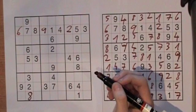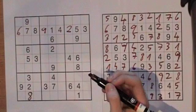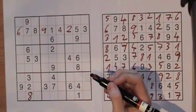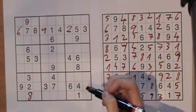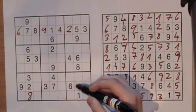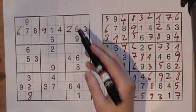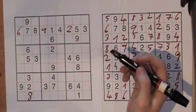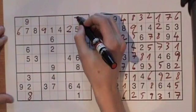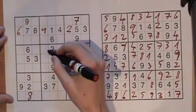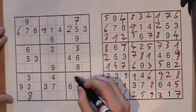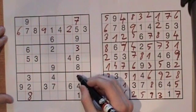Column number 8 is the next one which is quite full. I am only missing numbers 2, 3 and 7. Because numbers 2 and 3 are already in square number 3, the only number I can use here is number 7, and I have numbers 2 and 3 left. Because number 2 is already in row number 4, I can only use number 3 here. And therefore, number 2 goes into the last empty box in column number 8.